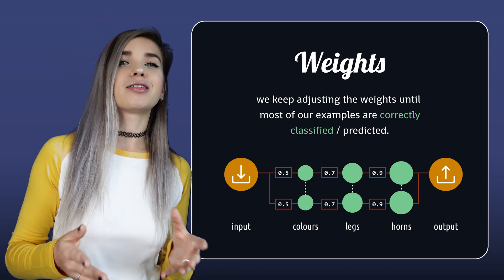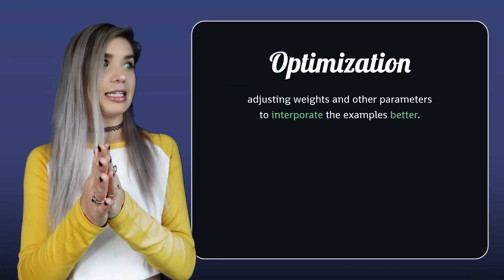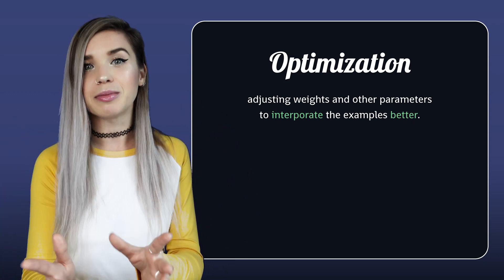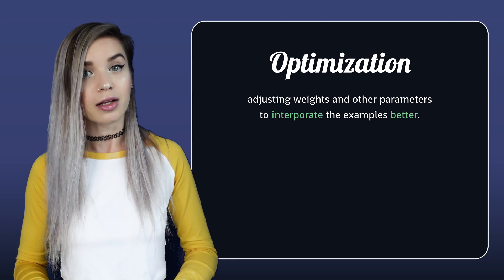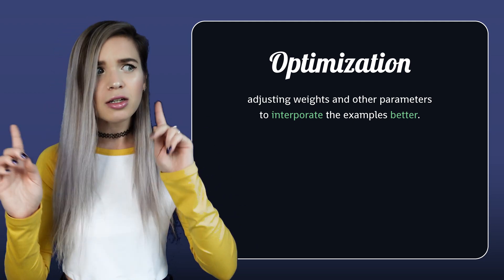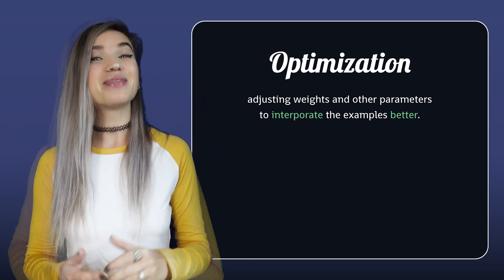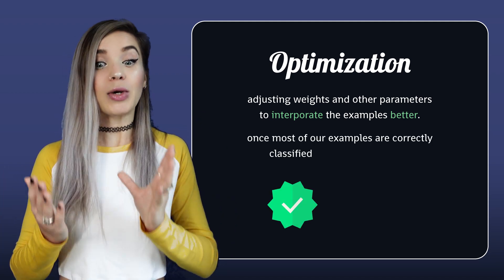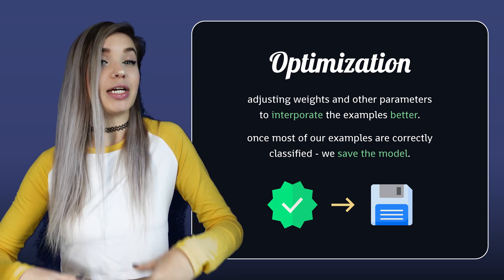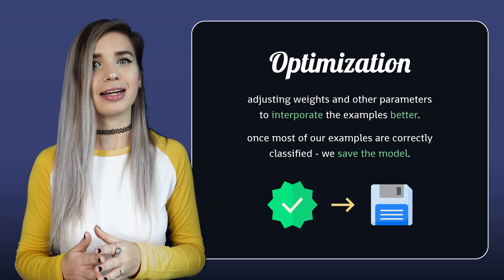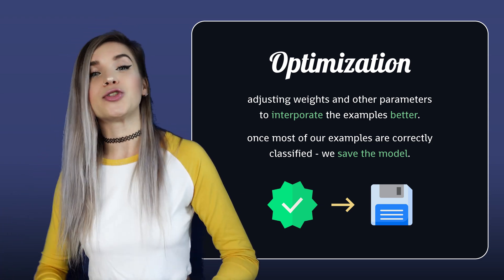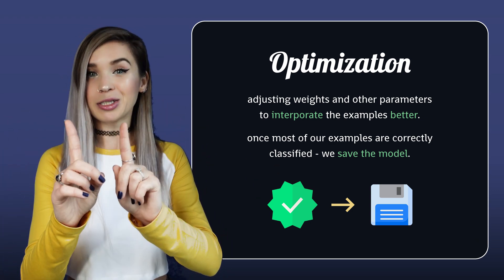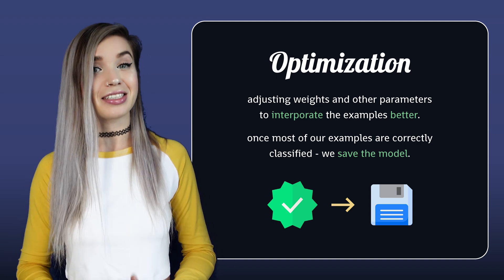It only means that we need to keep adjusting the weights until most of our examples are correctly classified or predicted. We call this process optimization. It can take a very long time, and we would usually optimize other parameters as well, not just the weights — but we'll talk about it in future lessons. The good news is, once we are done optimizing, we can save the neural network and load it whenever we'd like. Then we can expose it to goat images it has never seen before, and in most cases, they'll be correctly classified.